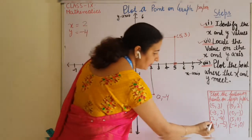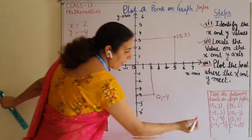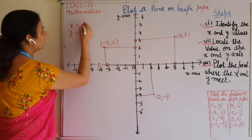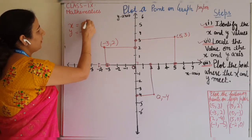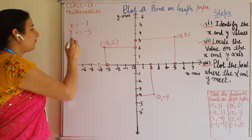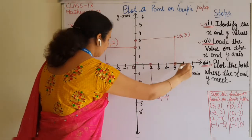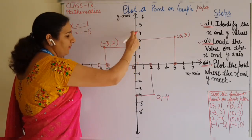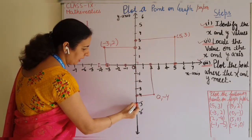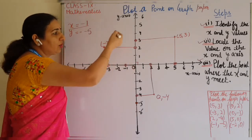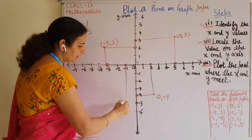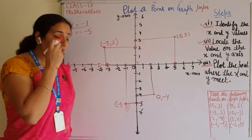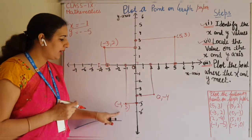The next point is (-1, -5). To plot (-1, -5), x is minus 1 and y is minus 5. Separate the x and y points: x is minus 1 — look on the x-axis and find minus 1 here. Then y is minus 5 — look on the y-axis and find minus 5 here. Extend both lines and the intersection gives the point (-1, -5). When drawn on a proper graph paper, these points can be plotted very accurately.